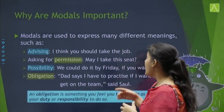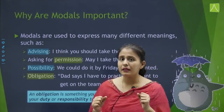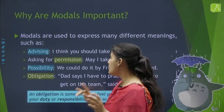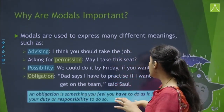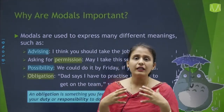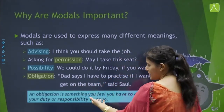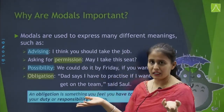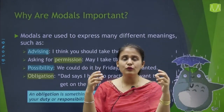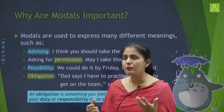Next is obligation. 'Dad says I have to practice if I want to get on the team.' Obligation is something you feel you have to do. For example: 'You have to prepare for your exams well if you want to have good grades.' It is our responsibility to perform this task. So if that sentence comes to an obligation, it is an obligation.